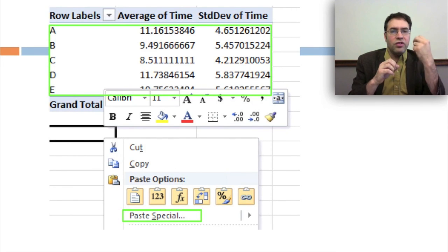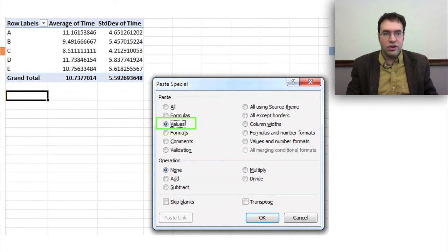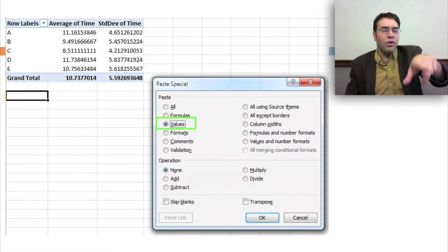We then get a set of variables. So for each row, for each skill in this case, we get an average time and a standard deviation of time, which we then select all of and paste special values. And click down below and copy out the data.